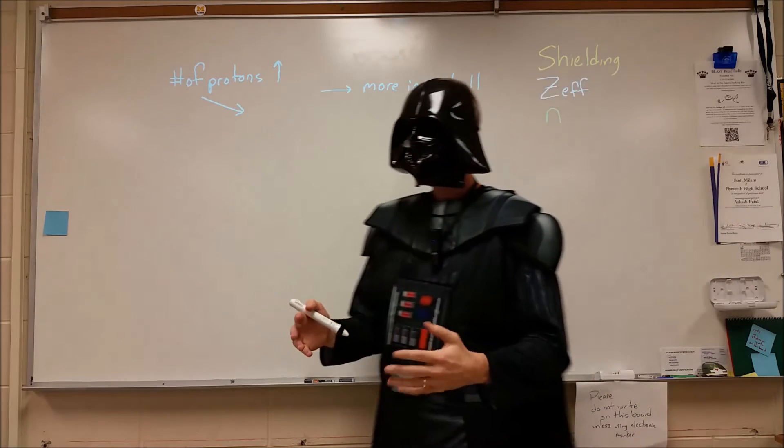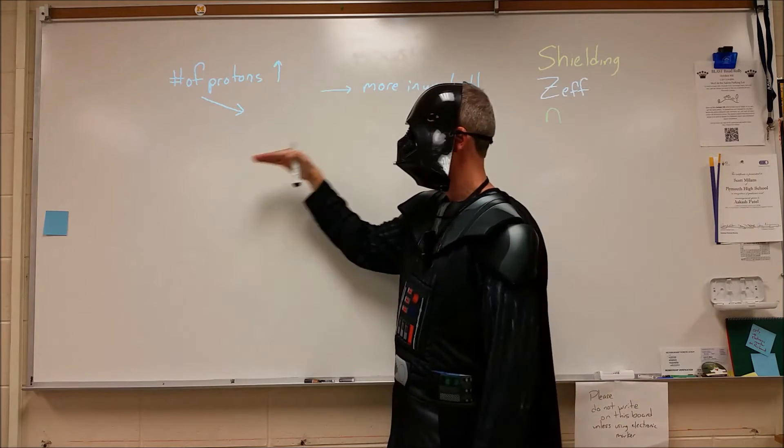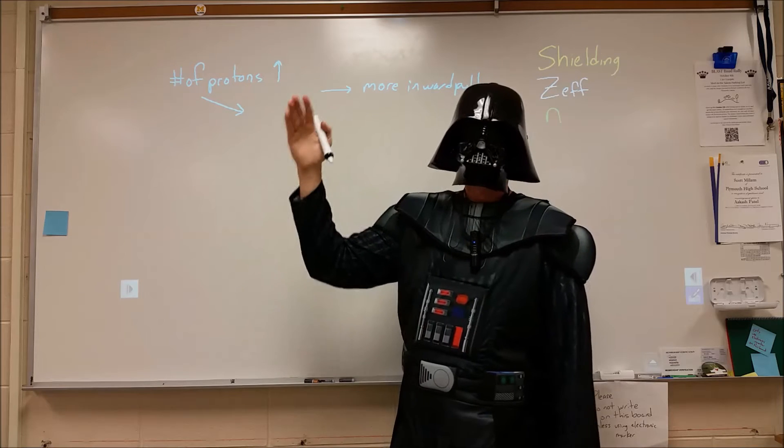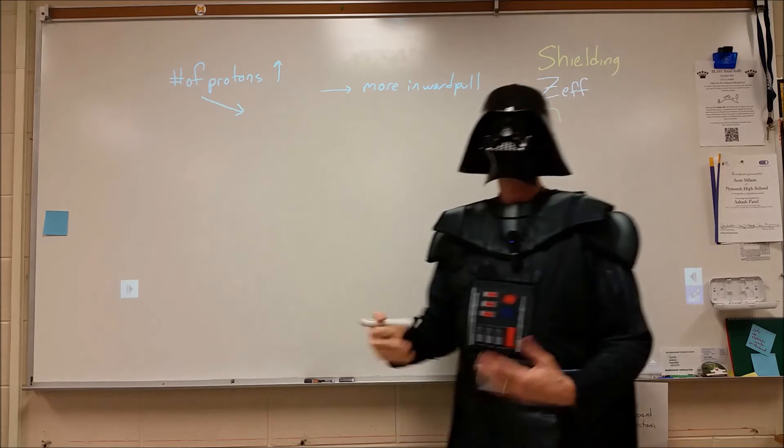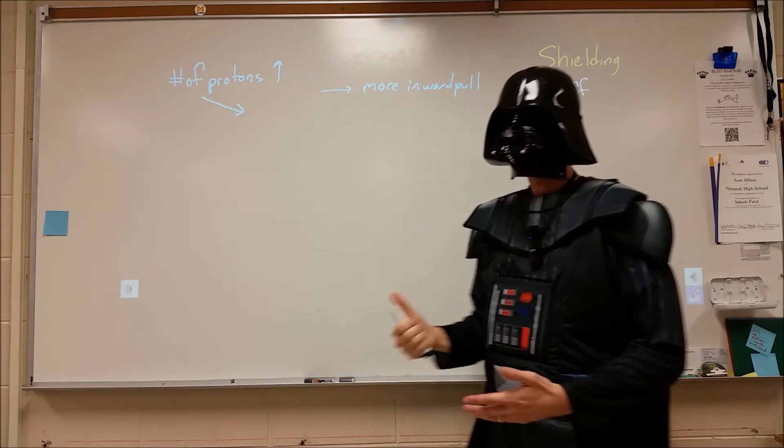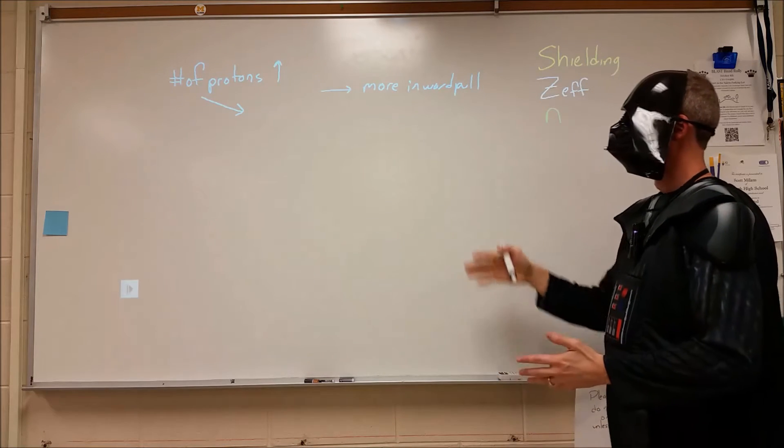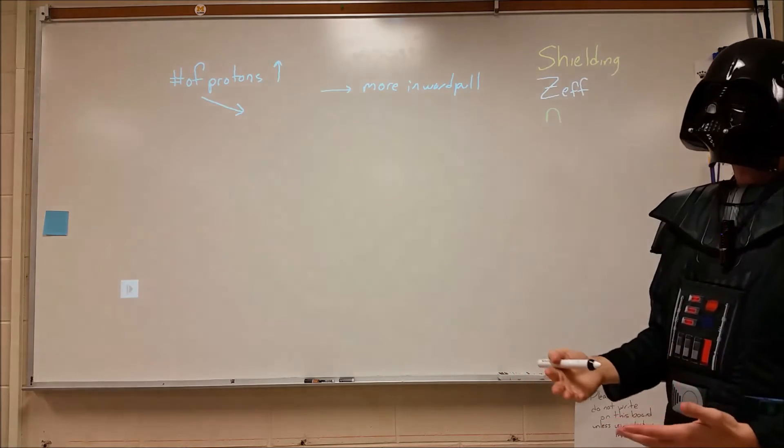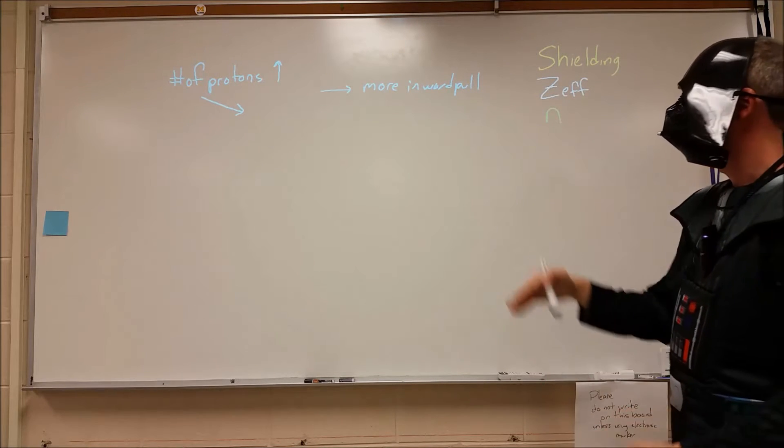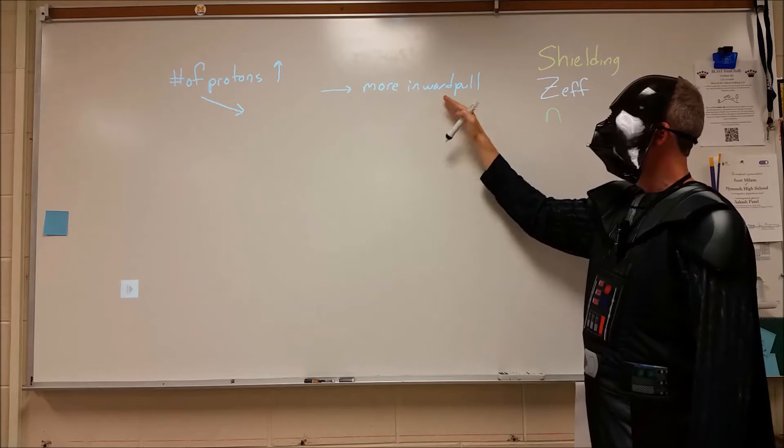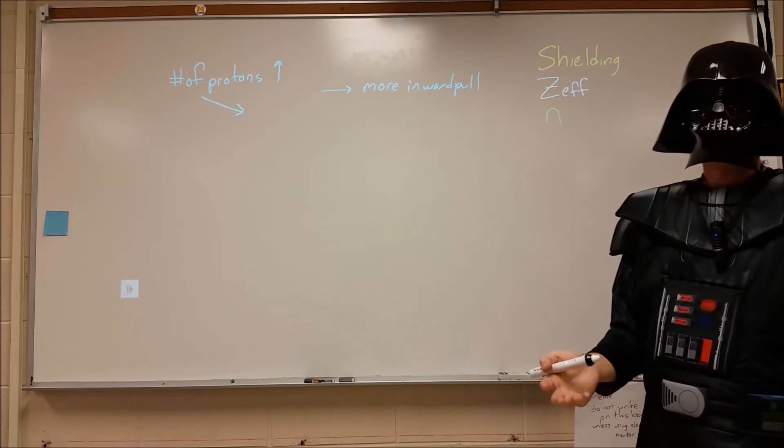So first of all, we need to start with this. As you move across a period on the periodic table, or as you move down a group in the periodic table, if you're moving in this general direction, the number of protons in each atom is going to increase as we move in that direction. So as the number of protons goes up, moving from say lithium to fluorine or from lithium to potassium, then we're going to see more inward pull from all those protons.